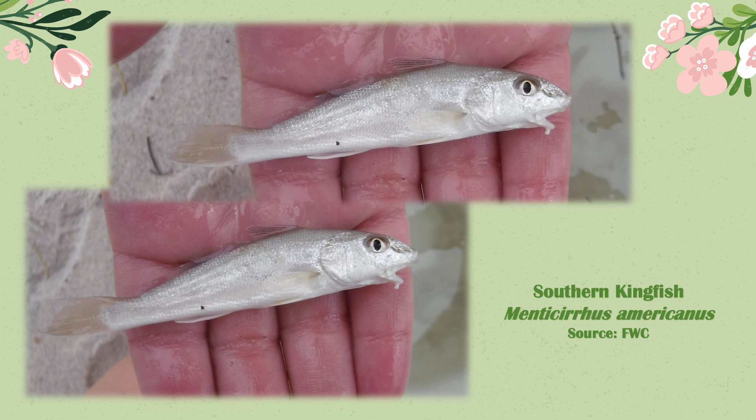These are a couple of photos of southern kingfish, Menticirrhus americanus. These fish reach sexual maturity at one year of age, so they are quite the early bloomers.